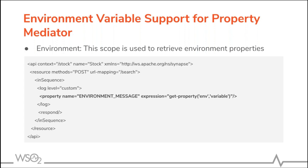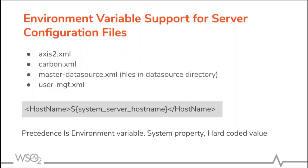Next, we have environment variable support for the property mediator. Previously, we gave the ability to read properties from system properties in the property mediator. Now we have extended it: we have given the support to read environment variables in the property mediator. In the given sample, when you define the scope as 'env', you can read from the environment variable.